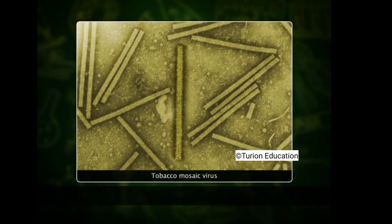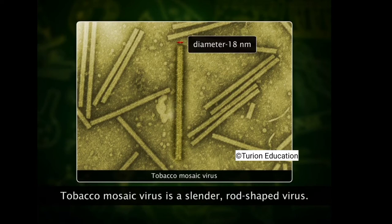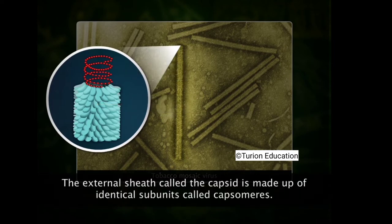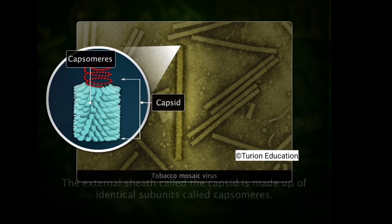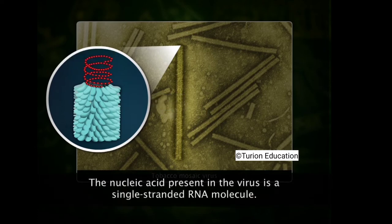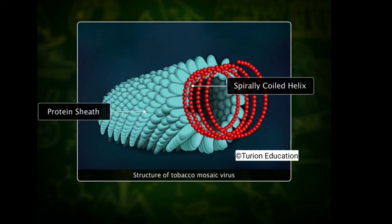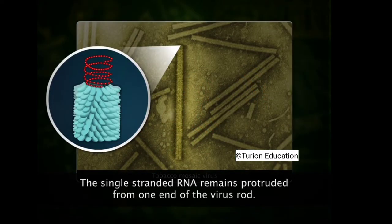Tobacco mosaic virus is a slender rod-shaped virus measuring about 18 nanometers in diameter and 300 nanometers in length. It has a central core of ribonucleic acid surrounded by protein. The protein part forms the external sheath — called the capsid — made up of identical subunits called capsomeres. The capsomeres are closely packed and arranged in a left-handed helix. The nucleic acid is a single-stranded RNA molecule running along the entire length of the rod, coiled as a helix at a radius of four nanometers inside the protein sheath, and protruding from one end of the virus rod.